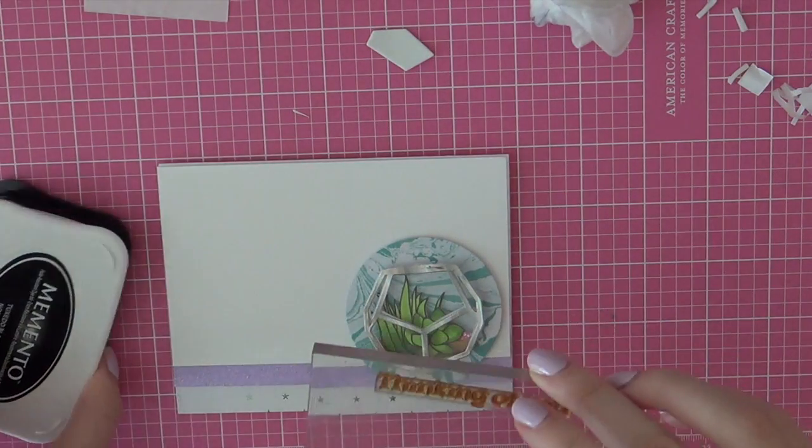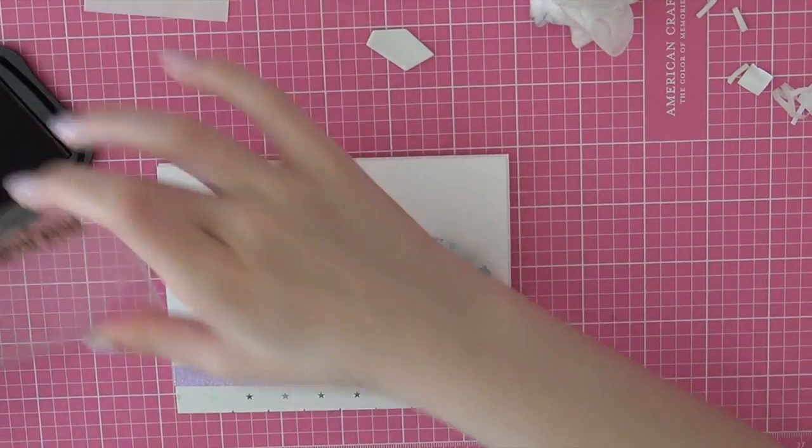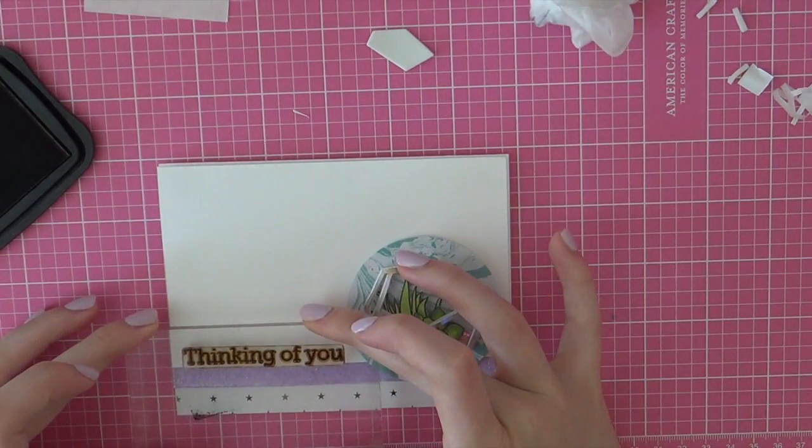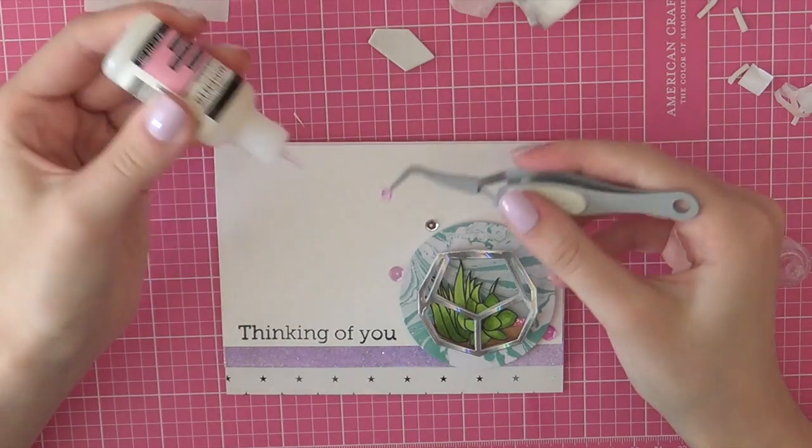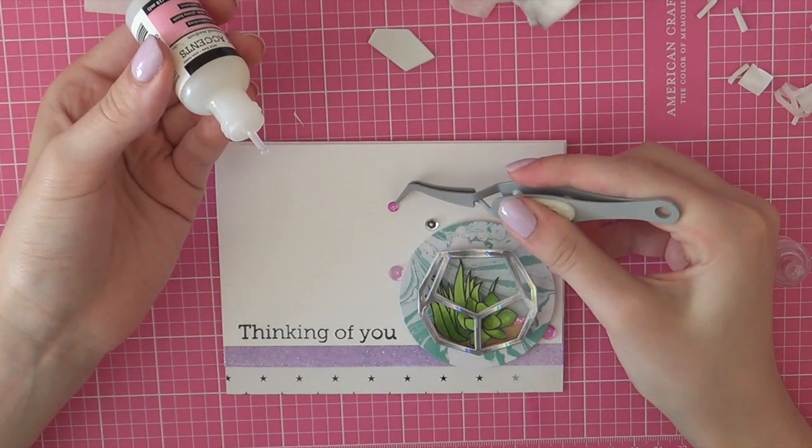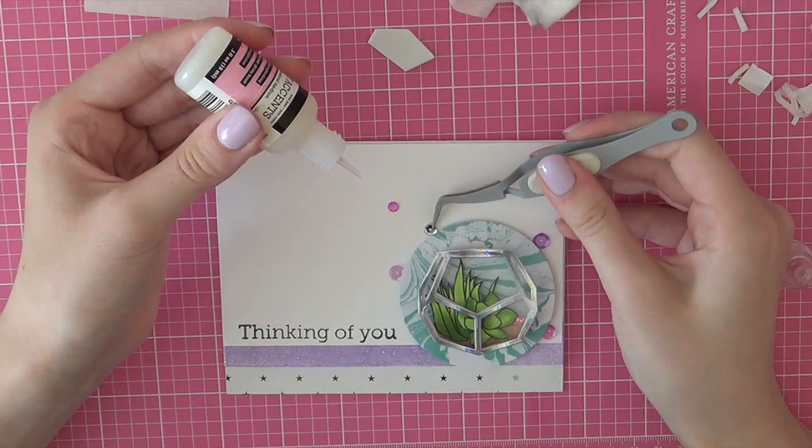And then I am going to stamp a greeting using the year-round sentiment stamp set by Hero Arts. And the sentiment says Thinking of You and I am going to stamp that using Memento Tuxedo Black Ink. Then to finish off my card I am going to adhere some sequins from the Purple Ball Gown sequin mix by The Thun.